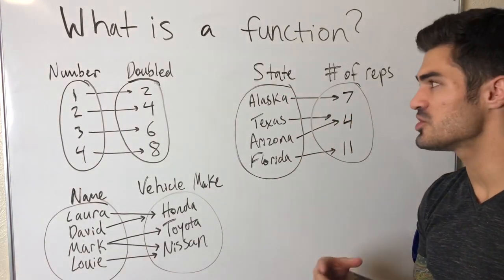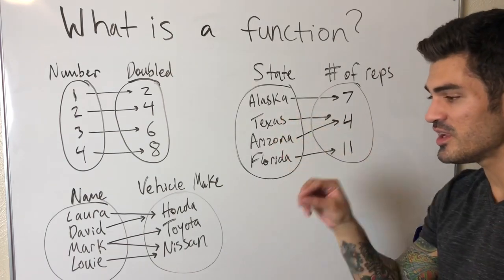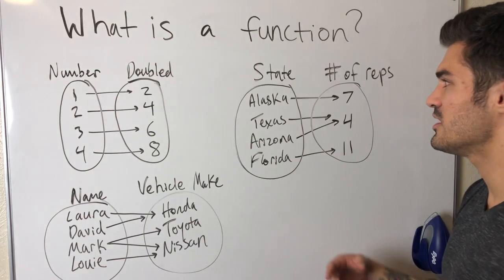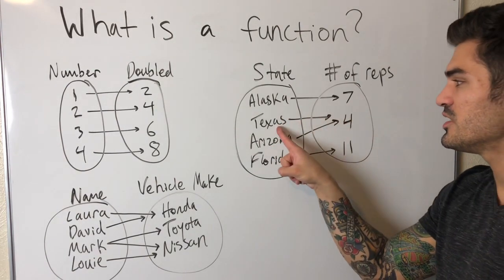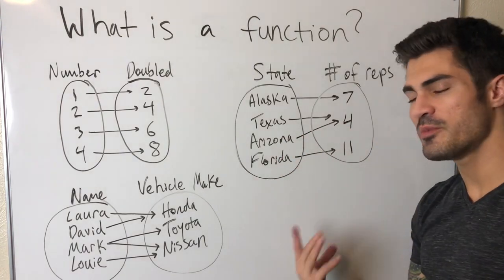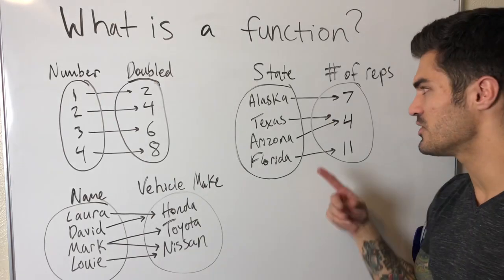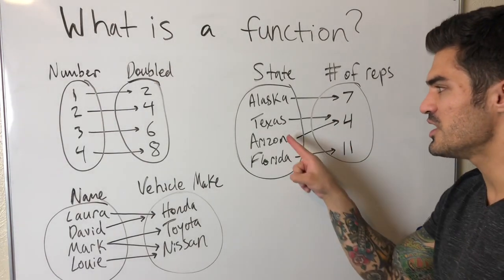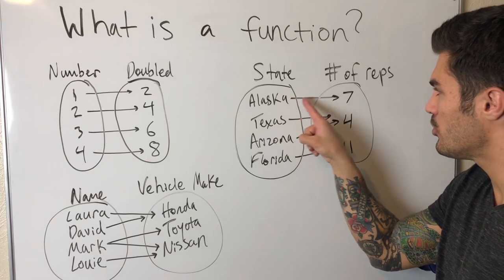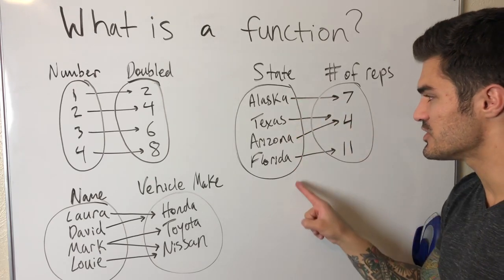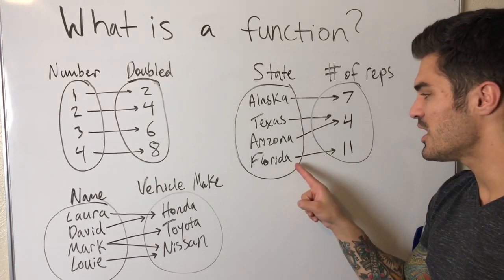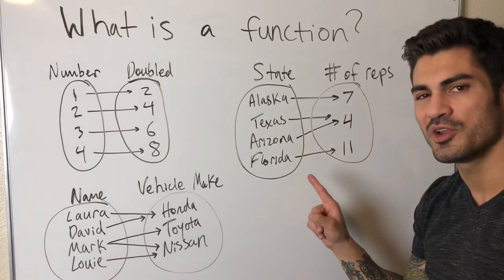Another example: U.S. states mapped to their number of representatives. Alaska maps to 7, Texas to 4, Arizona to 4, Florida to 11. Some may say it's not a function because two arrows point to 4, but remember — each input needs one output. There's only one arrow from each state, so this is a function. Multiple inputs pointing to the same output is fine.